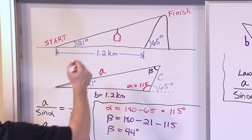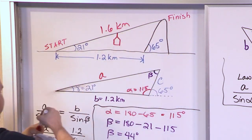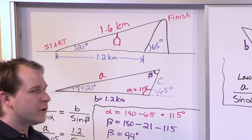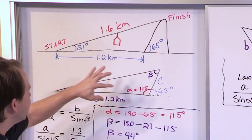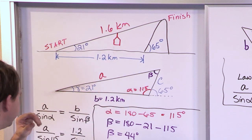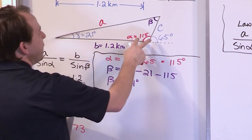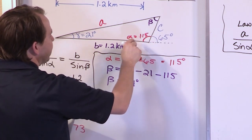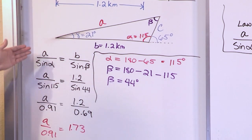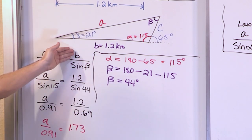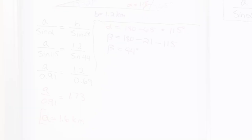Just to check: if the base distance is 1.2 kilometers, it makes sense that the slant wire should be a little more than that — and 1.6 kilometers is. So to summarize: we found alpha by subtracting the given exterior angle from 180, found beta from the triangle's interior angles summing to 180, then used the law of sines to get A equals 1.6 kilometers.